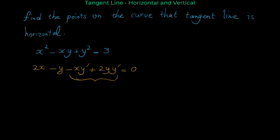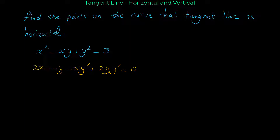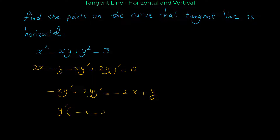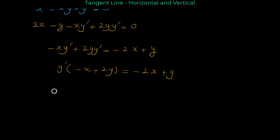We keep the two terms that have y' on the left and move the other terms to the right, because we want to solve for y'. We have -x·y' + 2y·y' = -2x + y. Factoring out y', we get y'(-x + 2y) = -2x + y. So y' = dy/dx = (-2x + y) / (-x + 2y).